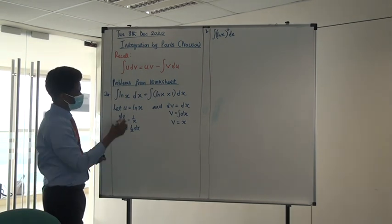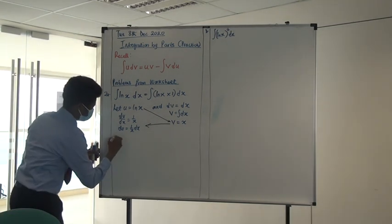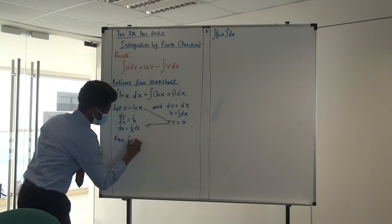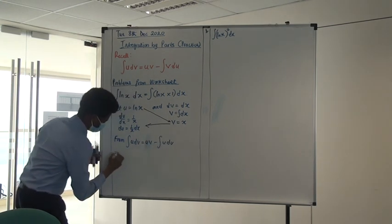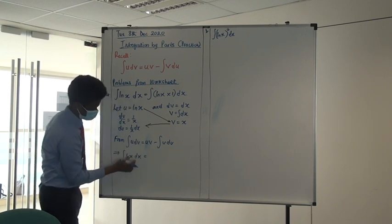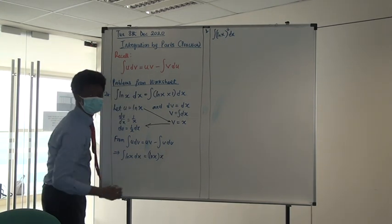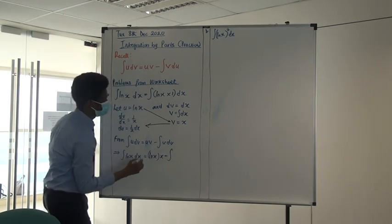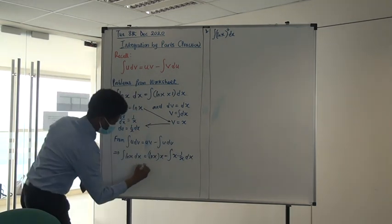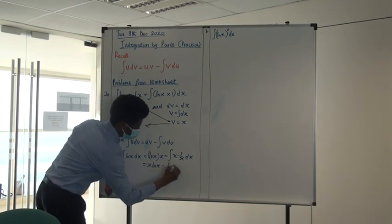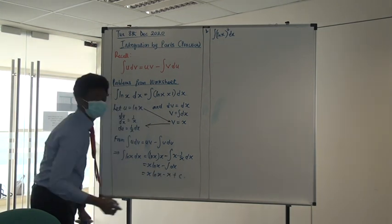By the rule, the integral of u dv equals u·v minus the integral of v du. So always state it: ∫u dv = uv − ∫v du. Then substitute: the original question equals uv, which is ln(x)·x (put in brackets so it doesn't look like x squared), minus the integral of v du — that's x times (1/x)dx. So the x and 1/x cancel, giving x·ln(x) minus ∫dx.